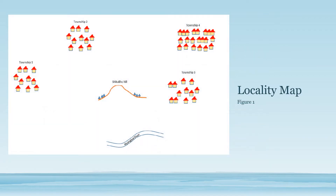Here we have our locality map. As you can see down here, we have our Nyangwe river, which is going to be used as the source of water, and then we have our Shikahilo hill and then we have our four townships.